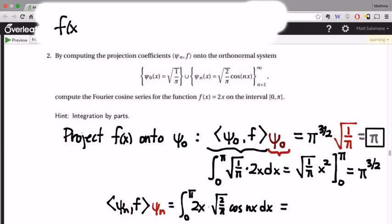the Fourier series for f of x will therefore begin sort of in this first box here with the function, constant function pi.